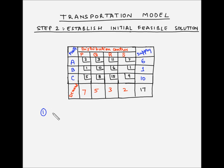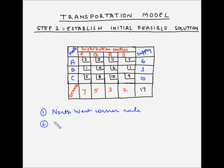The first method is the northwest corner rule. The second method is the least cost method. And the third method is Vogel's approximation method.